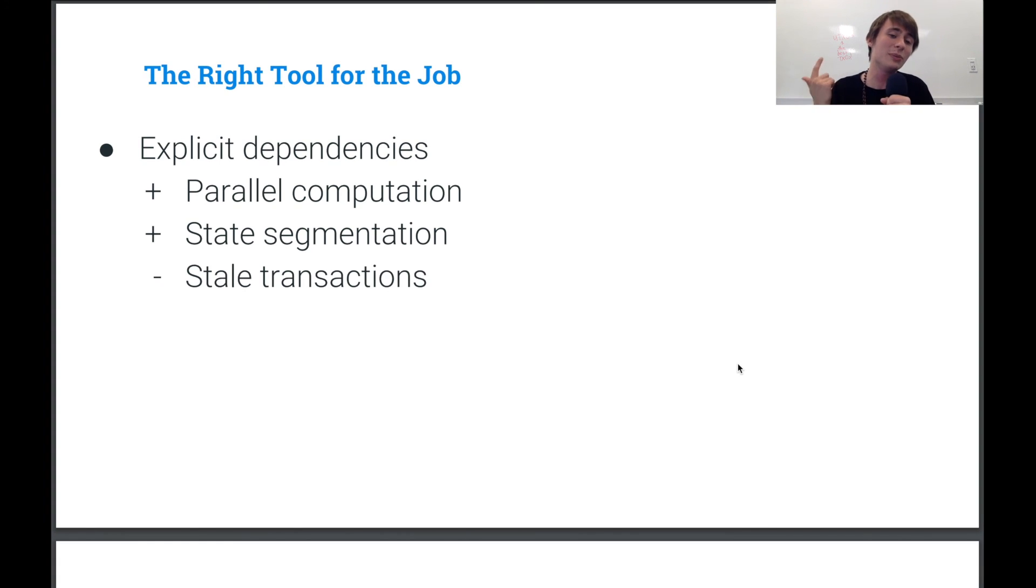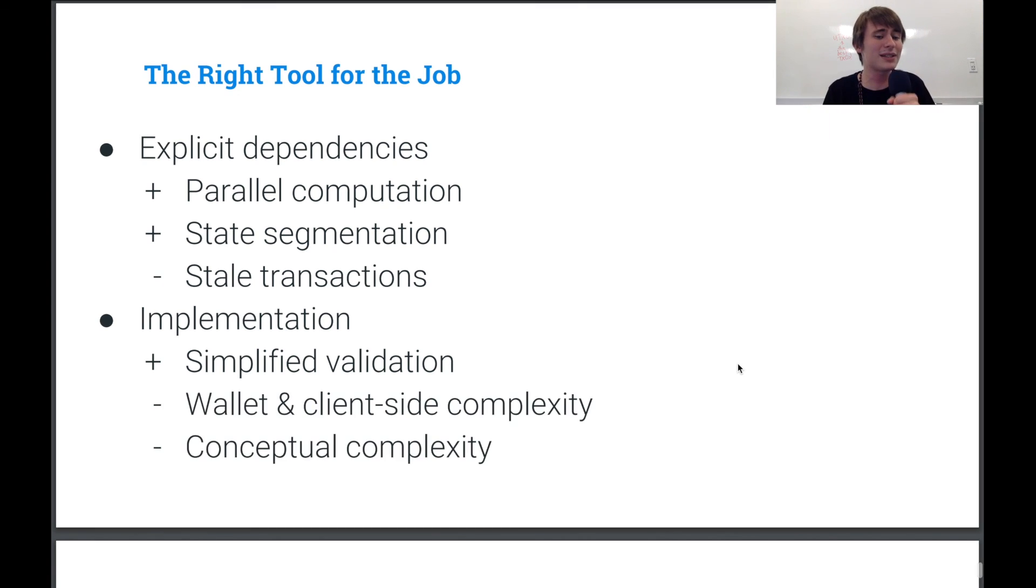And at the same time, we do have to be aware of the possibility of stale transactions. And another thing is, you know, we have to be aware of the implementation details. So, okay, well, we get simplified validation where you can validate different transactions completely separately from one another, so you do get this kind of parallelization. But at the same time, we do get added wallet and client-side complexity and a little bit of conceptual complexity from this whole structure.